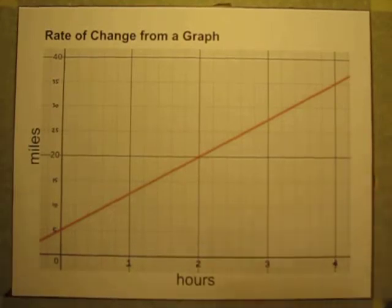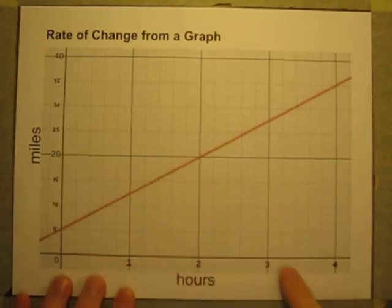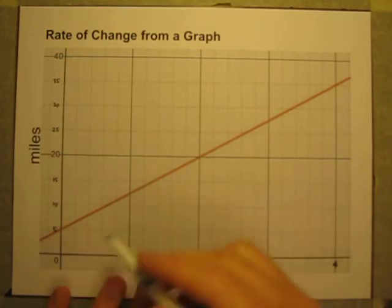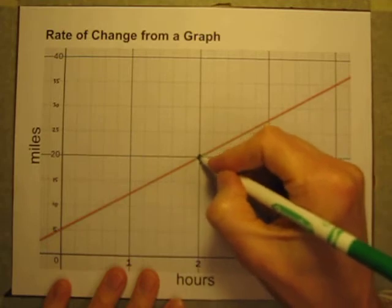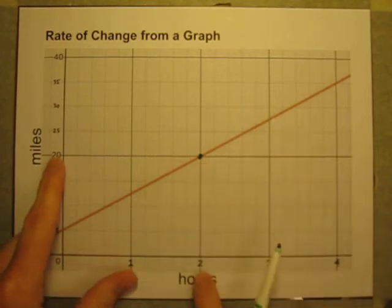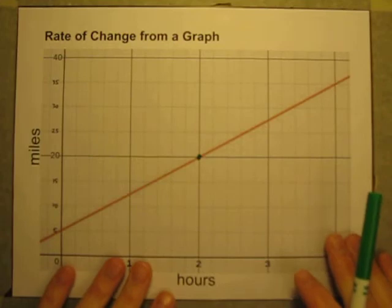This graph is showing you a little story about something traveling in miles and it's keeping track of its distance as the hours go by, from 0 to 4 hours. One thing you might be tempted to do is say, there's a point on the graph right there, and at that point the distance is 20 and the time is 2 hours, so 20 miles in 2 hours would be 10 miles per hour. But if you do that, you would be wrong. That is not the correct answer, and the reason is this is not a directly proportional relationship.